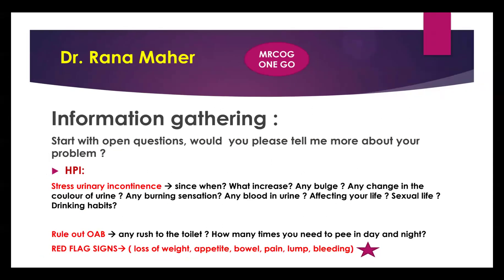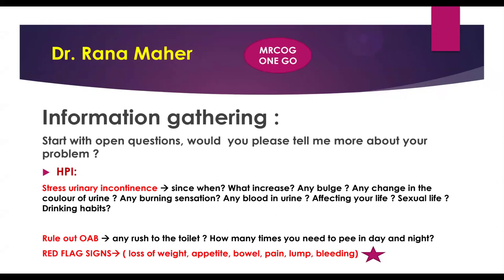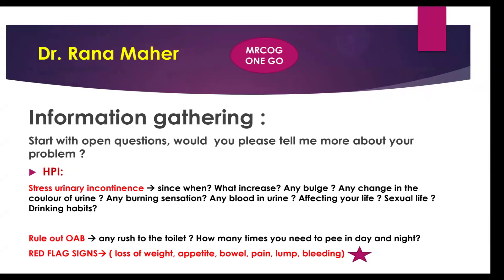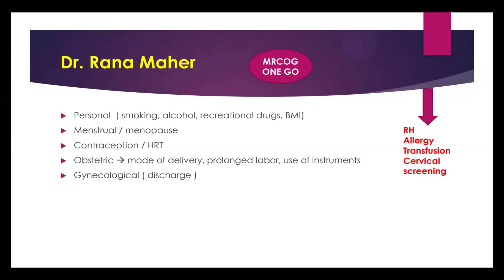To rule out overactive bladder, ask: 'Any rush to the toilet?' If yes, ask how many times she needs to urinate day and night. If no, one question is enough. For personal history, ask about smoking — it increases muscle weakness and worsens stress urinary incontinence. Alcohol increases urine output and can contribute to urinary incontinence. BMI is crucial; high BMI is another significant risk factor.